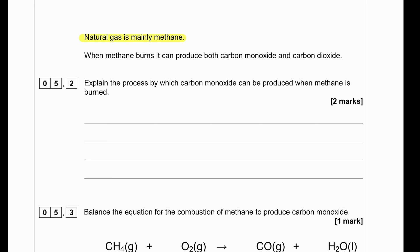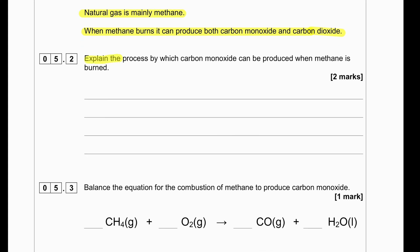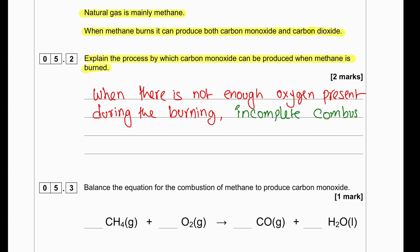Natural gas is mainly methane. When methane burns, it can produce both carbon monoxide and carbon dioxide. Explain the process by which carbon monoxide can be produced when methane is burned. When there is not enough oxygen present in the burning of that methane, then incomplete combustion occurs, which produces toxic gases like carbon monoxide.